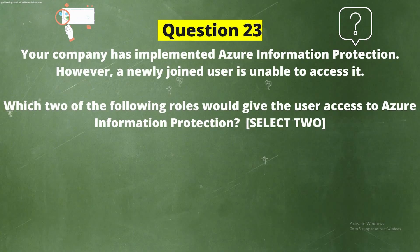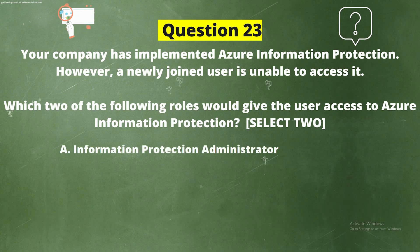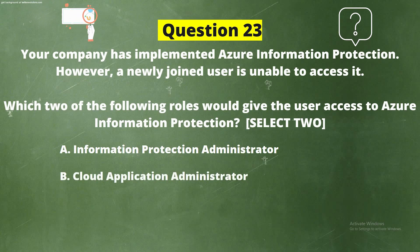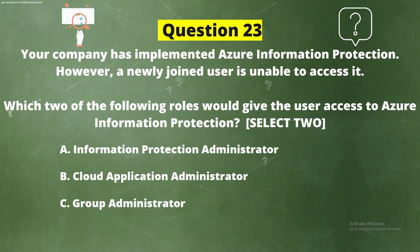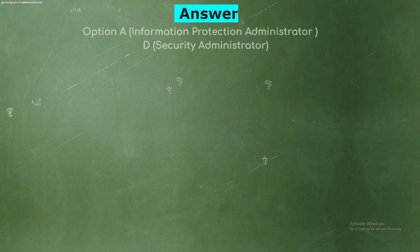Question 23. Your company has implemented Azure Information Protection. However, a newly joined user is unable to access it. Which two of the following roles would give the user access to Azure Information Protection? Select two options. Option A: Information Protection Administrator. Option B: Cloud Application Administrator. Option C: Group Administrator. Option D: Security Administrator. The correct answers are Option A, Information Protection Administrator, and Option D, Security Administrator.